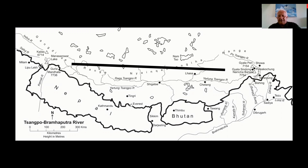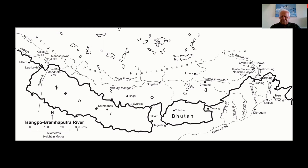Both peaks are nearing 25,000 feet and form an impregnable wall. It is here that the river hits this barrier and creates a fantastic gorge. Early explorers, lacking maps and technology, could not determine whether after this gorge the river continued east to join the Irrawaddy and flow to Burma, or made a sudden near 90-degree turn toward the Arunachal border and then flowed down to the Assam plains. This physical exploration by different people took a long time.